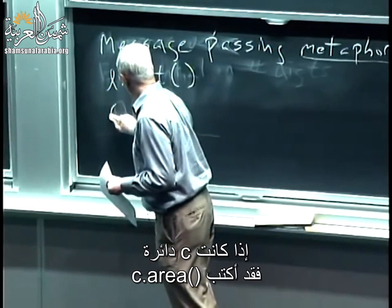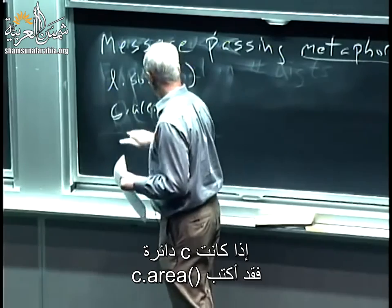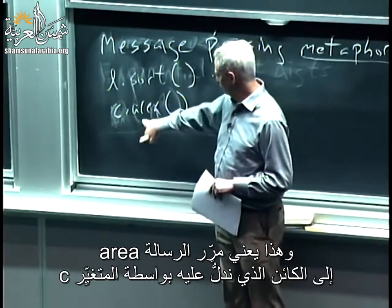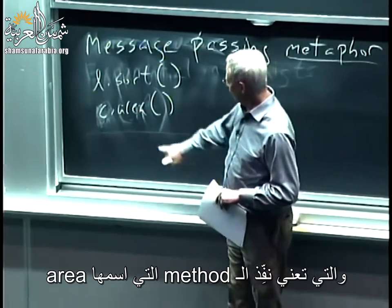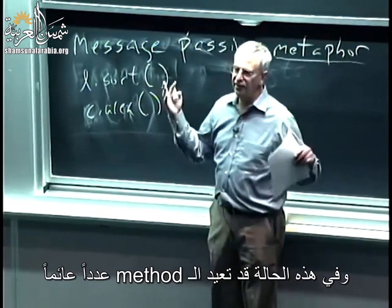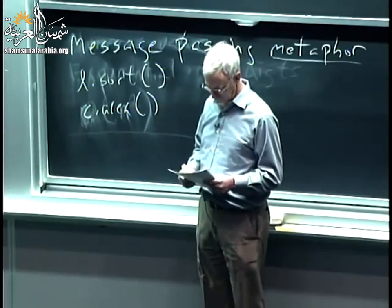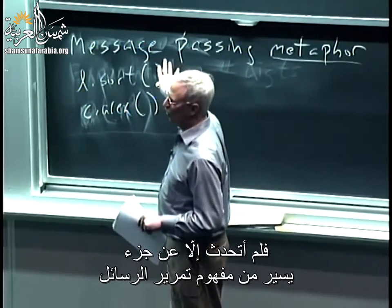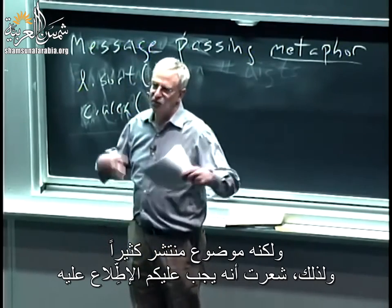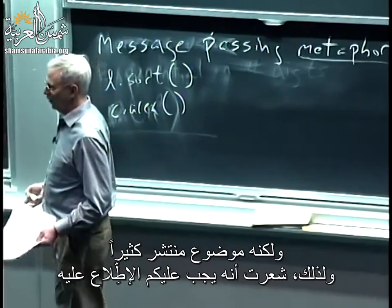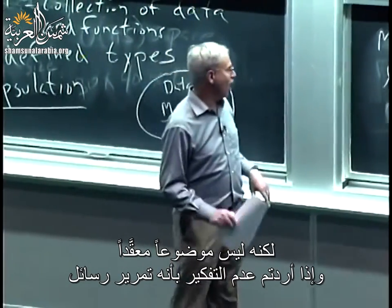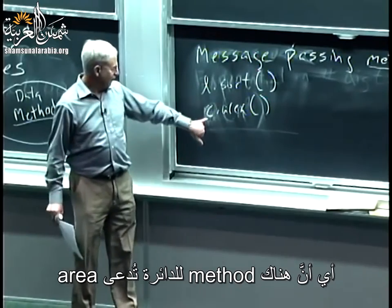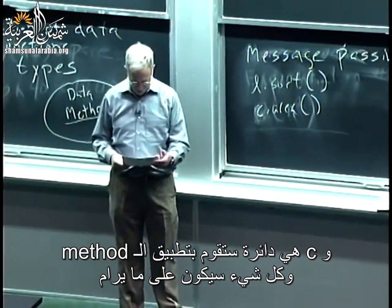If c is a circle, I might write 'c.area' — this passes to the object c the message 'area,' which executes a method called area that might return a float rather than have a side effect. Don't get carried away with the message-passing paradigm — it's just a metaphor, nothing very deep. If you prefer to just think 'c has a method area, c is a circle, we'll apply it and do what it says,' you won't get in any trouble at all.